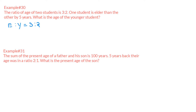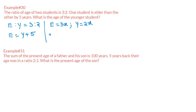It is given that one student is elder than the other by five years, so the elder student's age equals the younger student's age plus five years. From the given ratio, the age of the elder student would be 3x and the age of the younger student would be 2x. Using the expression E = Y + 5, we can write 3x = 2x + 5.